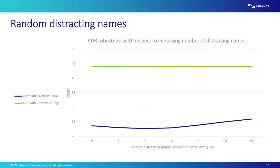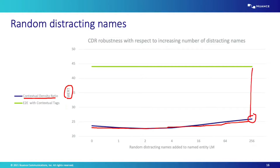We also tested the robustness of contextual density ratio by adding random distracting names to each conversation's name list. Contextual density ratio doesn't significantly degrade word error rate within tags as we introduce 1, 2, 4, 16, or 64 distracting names. Some larger degradation appears at 256 distracting names, but the word error rate within tags remains much better than the baseline — so contextual density ratio appears robust against random distracting names.